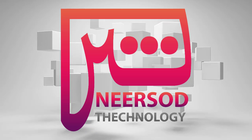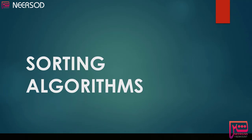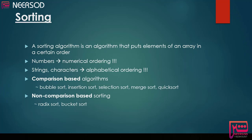Hi, in this chapter we are going to talk about sorting algorithms. So what's the aim of sorting? A sorting algorithm is an algorithm that puts elements and items of a given array in a certain order. Usually this array is a one-dimensional array of integers, doubles, floats, strings or custom objects. For numbers it can be the numerical ordering, or for strings and characters it can be the alphabetical ordering.